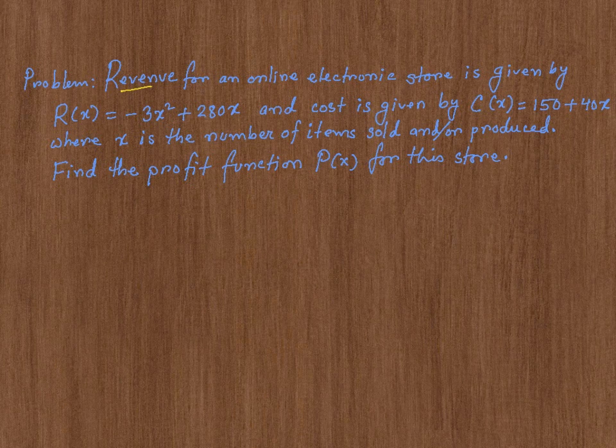Their revenue, R(x), is given by -3x² + 280x, where x is the number of items sold. And the cost for producing x items is C(x) = 150 + 40x.